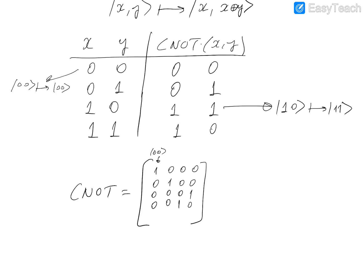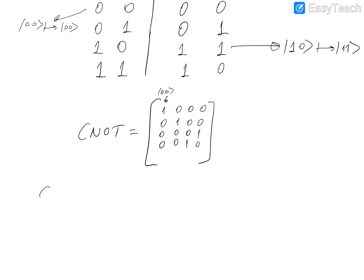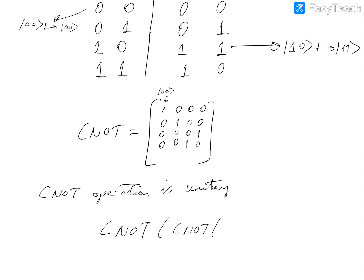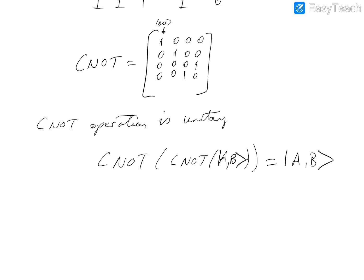The CNOT transformation is clearly unitary, hence it's reversible. In fact, CNOT is its own inverse — if we apply CNOT on the same vector again, we get the original vector back. CNOT of CNOT of |a,b⟩ equals |a,b⟩. This is a very practical gate in quantum computation and is widely used in many algorithms, as we shall see.